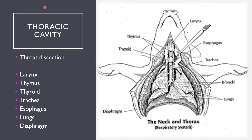The next step in our dissection is opening up the neck and thorax region. In this step, you can see the larynx, thymus, thyroid, trachea, esophagus, lungs, and the diaphragm. The larynx is this square rectangular box structure attached to the trachea.